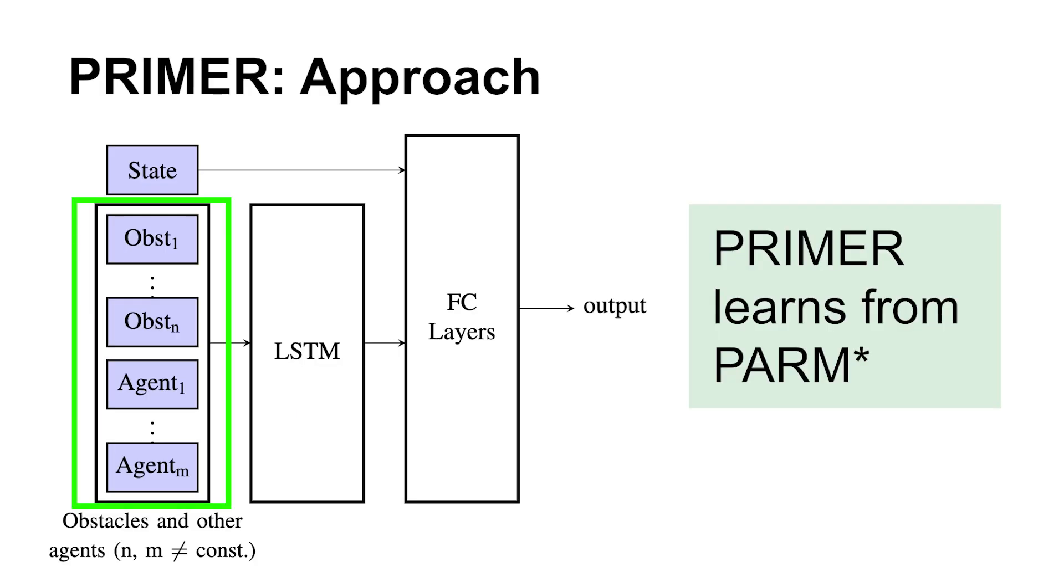Now we explain Primer's learning architecture. We leverage recurrent neural networks to process a varying number of obstacles and agents. Specifically, we use LSTM for this purpose. We then concatenate the ego-agent state with the LSTM output and feed it into fully connected layers.